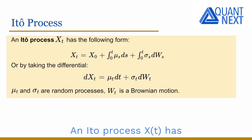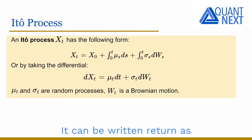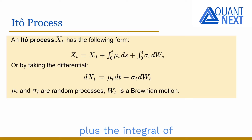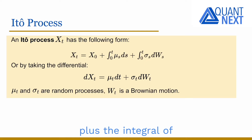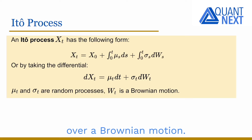An Ito process x_t has the following form. It can be written as its initial value x_0 plus the integral of a process mu over time, plus the integral of another process sigma over a Brownian motion.